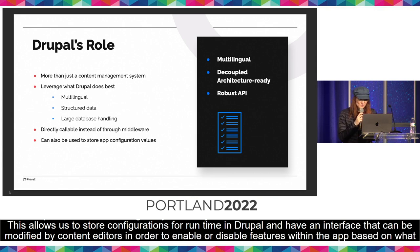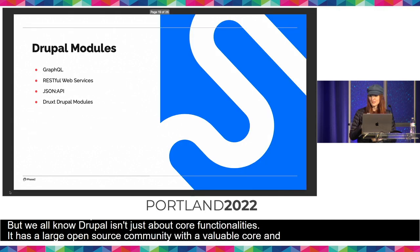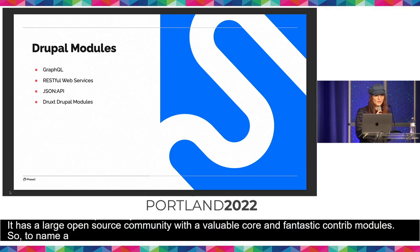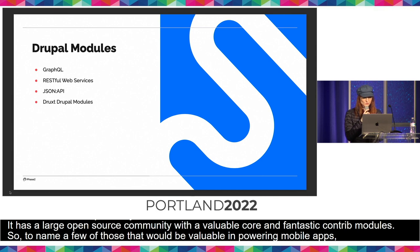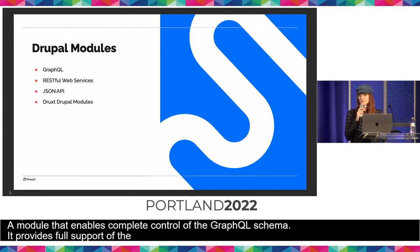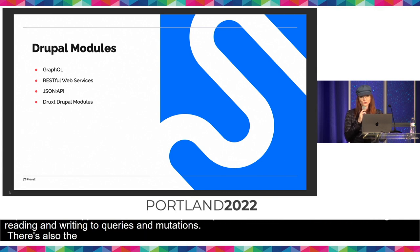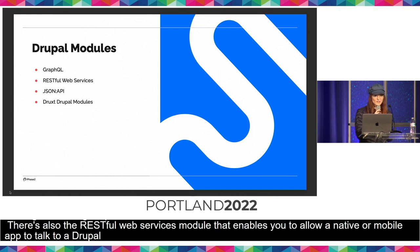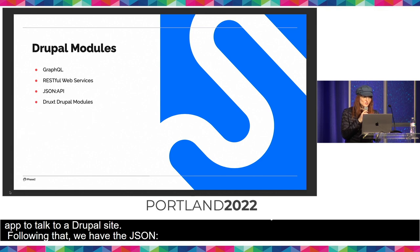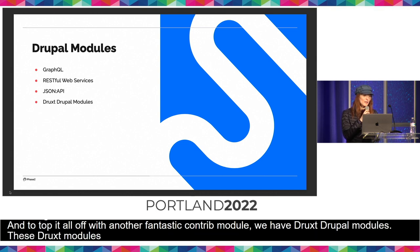Drupal has a large open source community with valuable core and contrib modules. For powering mobile apps: the GraphQL contrib module enables complete control of the GraphQL schema with full spec support including queries and mutations. The RESTful Web Services core module exposes entities as REST resources. The JSON API core module implements the JSON API spec for Drupal entities. And the Druxed Drupal modules greatly simplify decoupled development, making powering mobile apps much easier.